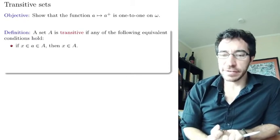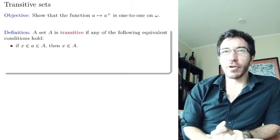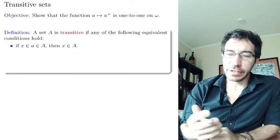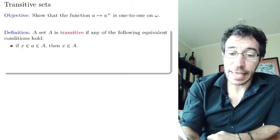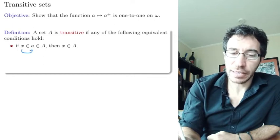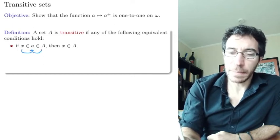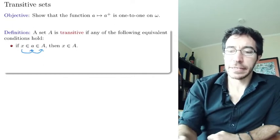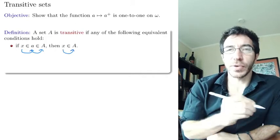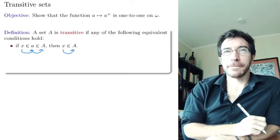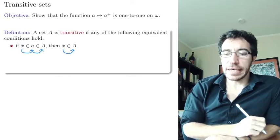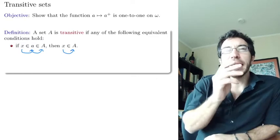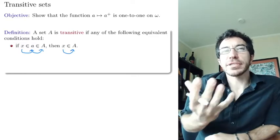A set A is transitive if the following condition holds: whenever an element x belongs to something that belongs to A, then x directly belongs to A. This is saying that the membership relation is transitive.